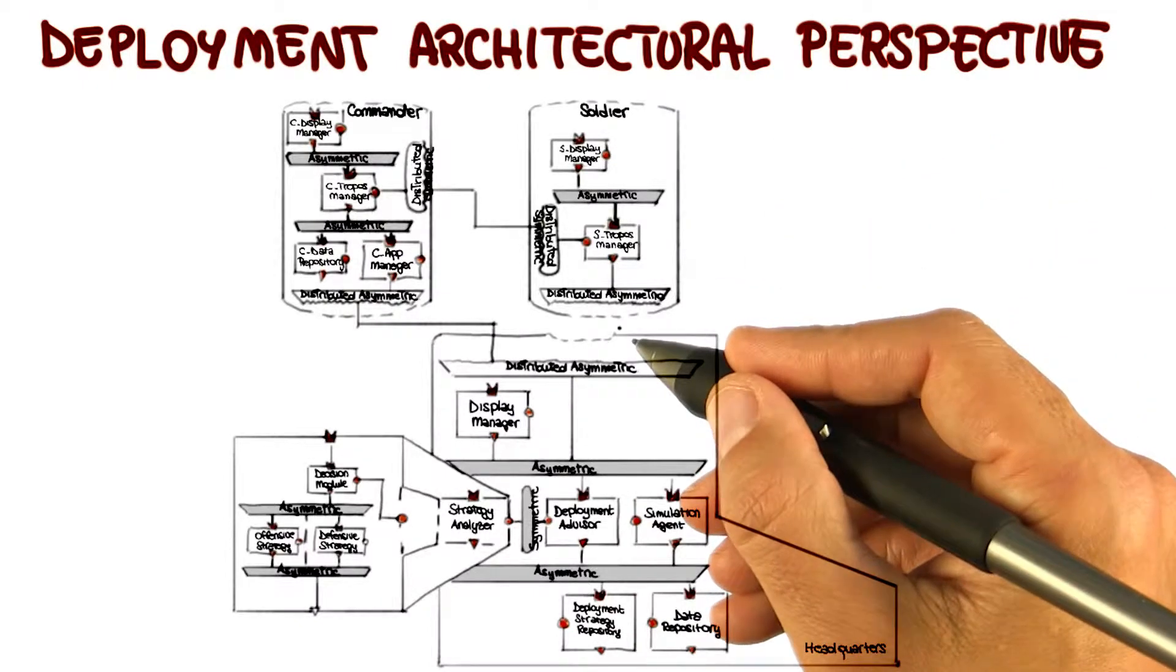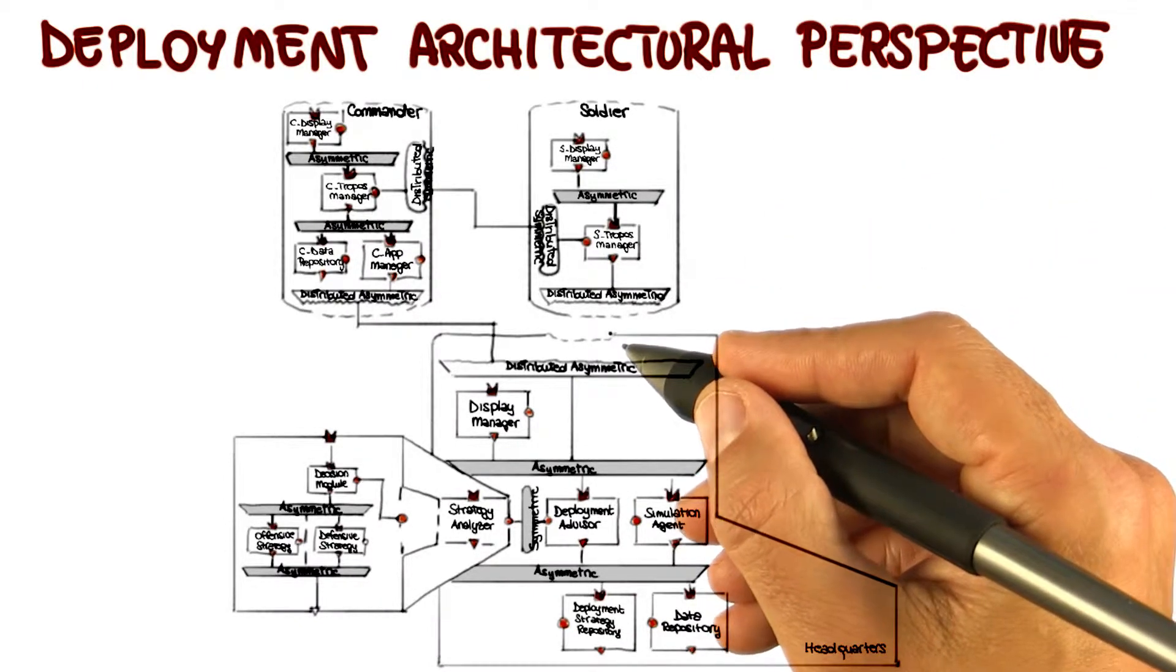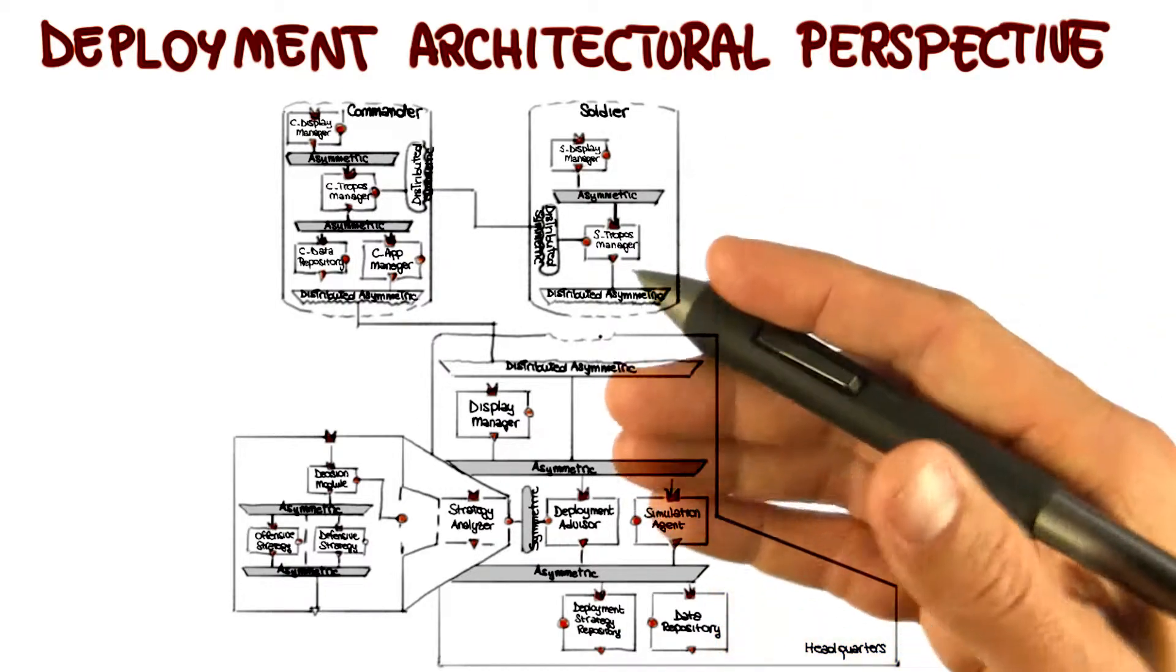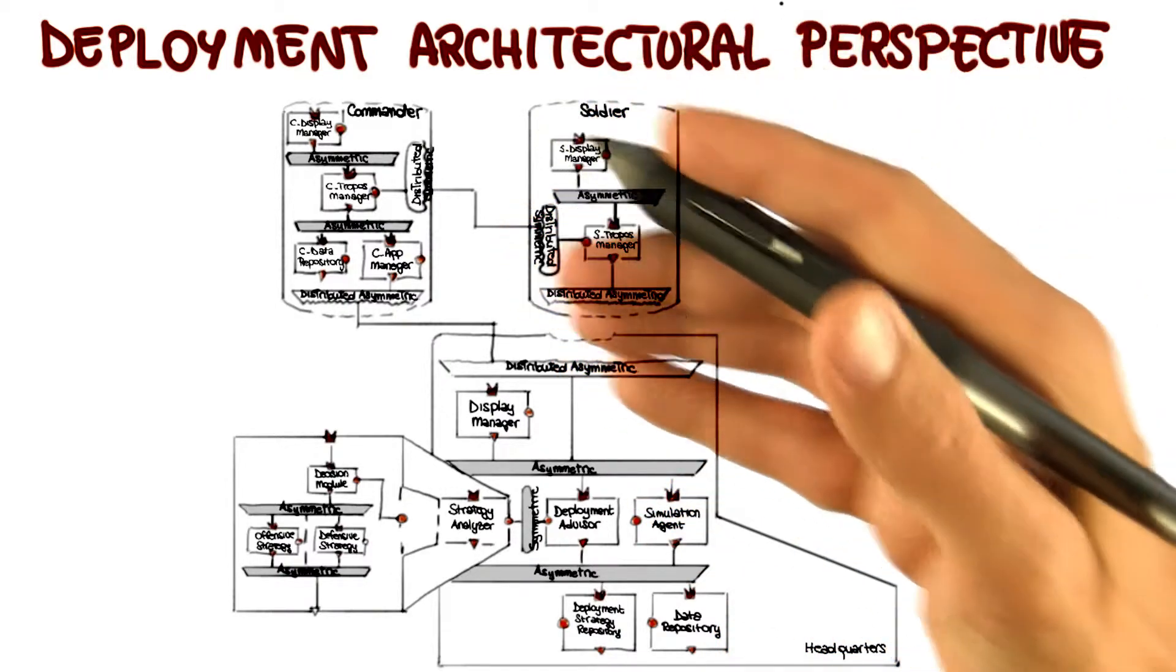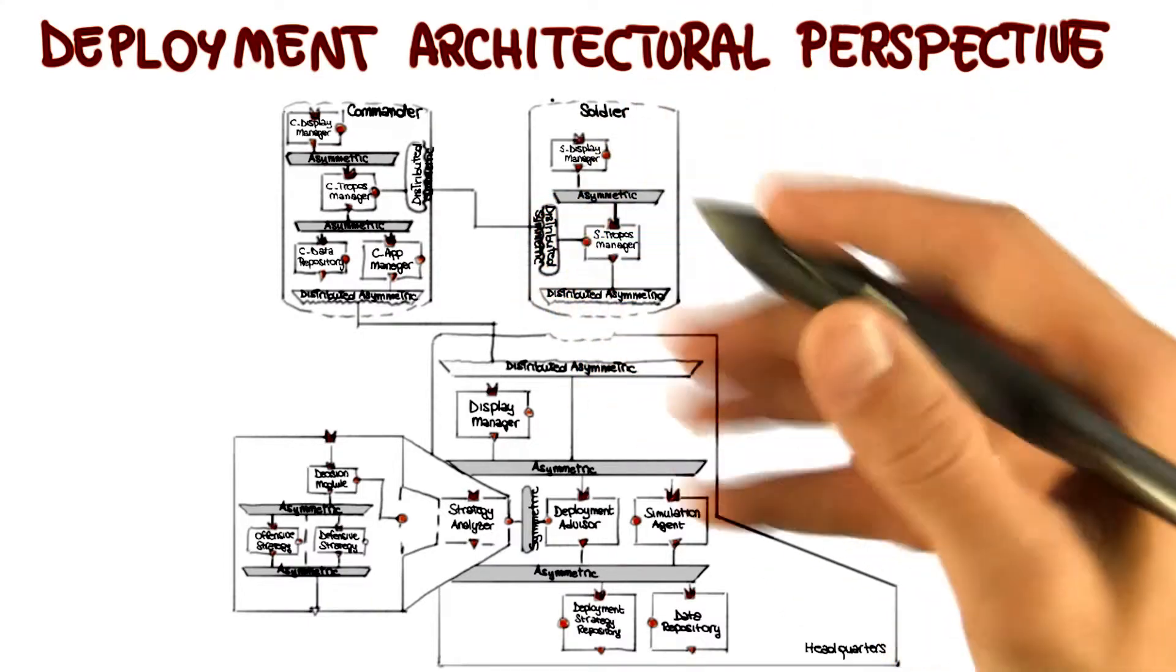Or again, the required network bandwidth. Does the system have enough network bandwidth to enable the required interactions? And so on. So all of these characteristics, all of these qualities, you can assess when you do this final mapping of the components to the hardware elements.